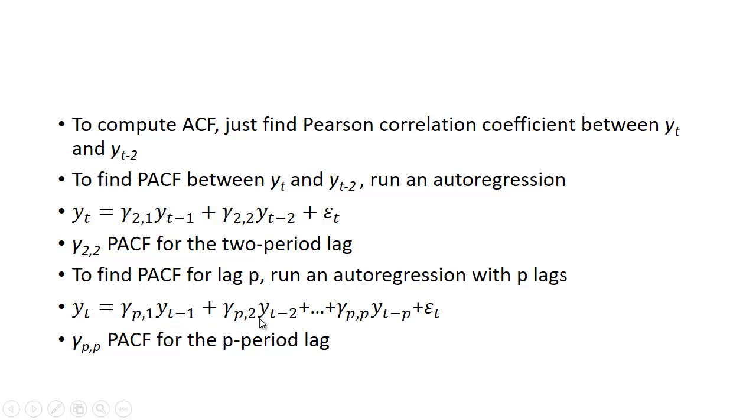So this coefficient γ_p,p is going to be the partial autocorrelation function for the p period lag.